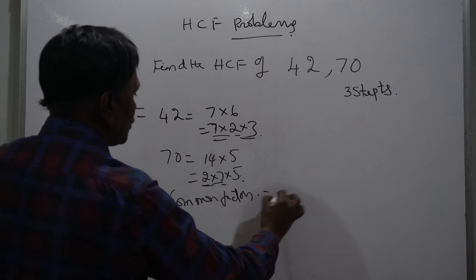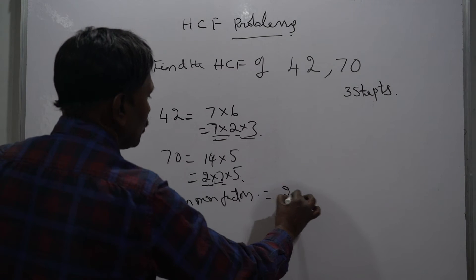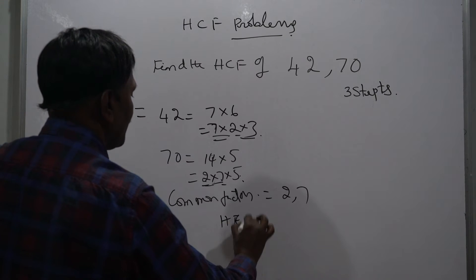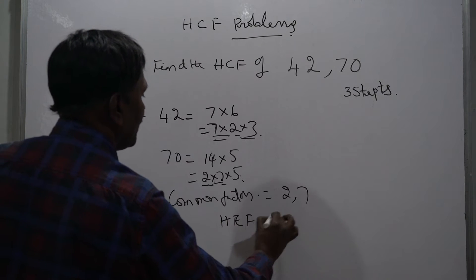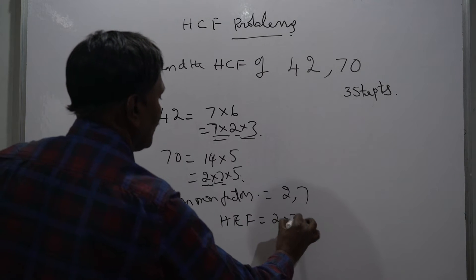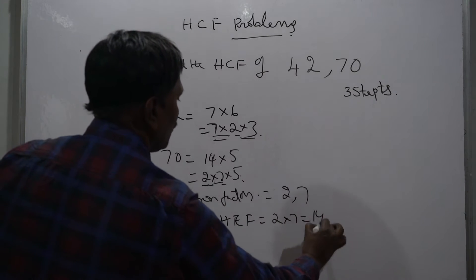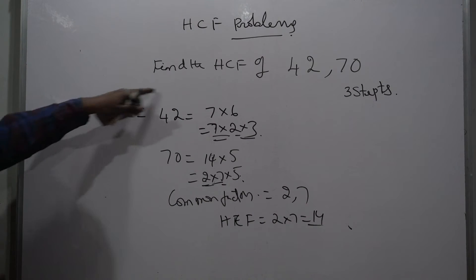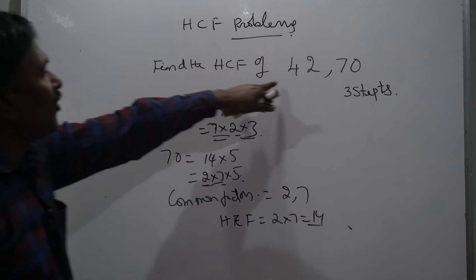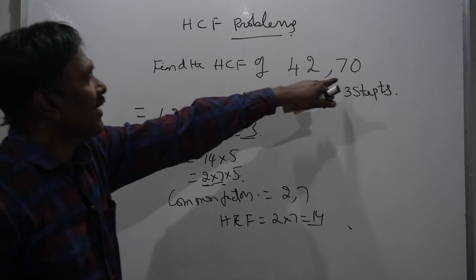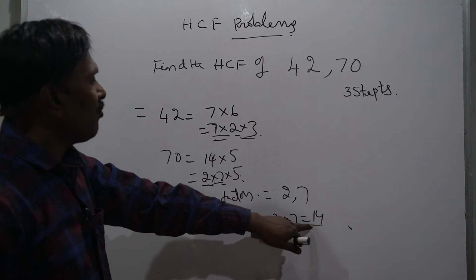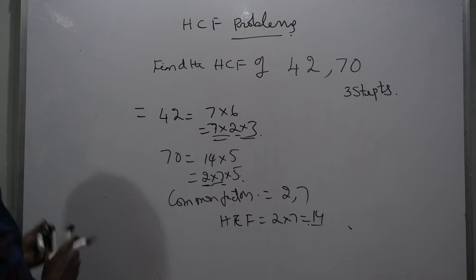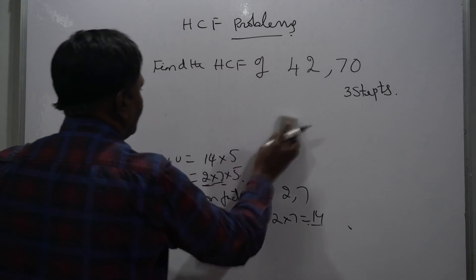So the HCF is 2 into 7, that is 14. So the HCF of 42 and 70 is 14. Next we will take one more example.